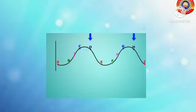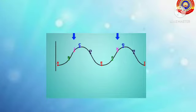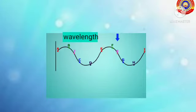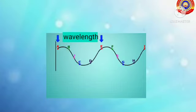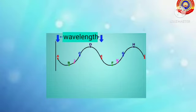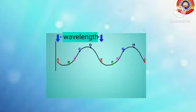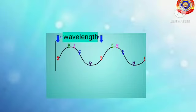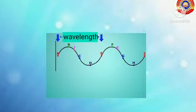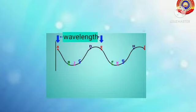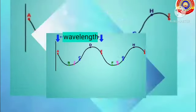The distance advanced by the wave by the time a particle completes one vibration — that is, from A to E — is the wavelength. Like this, we can consider the length from J to K also. The wavelength from J to K is the same as that from A to E.